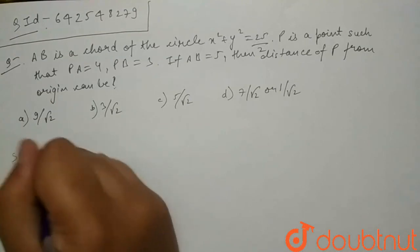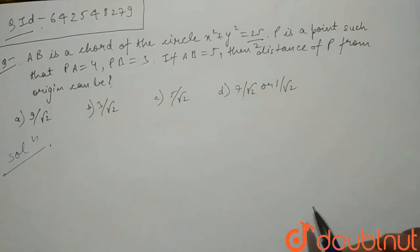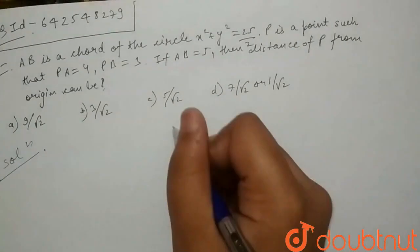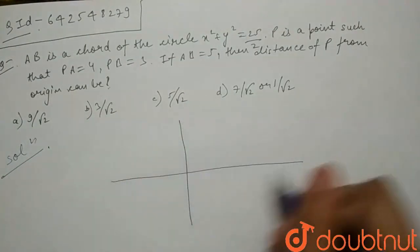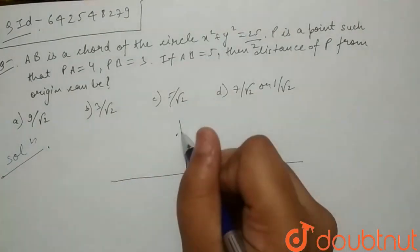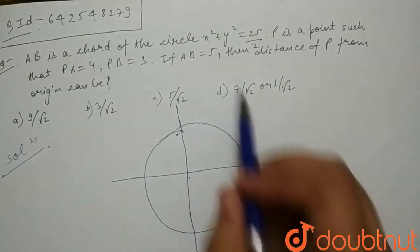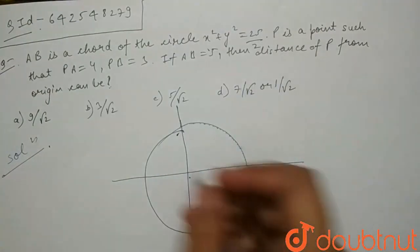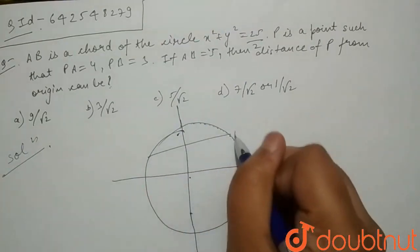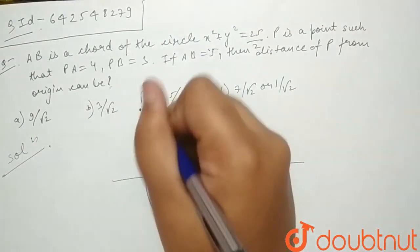So let's begin the solution. Firstly, for this question, we need to draw the diagram. So let's draw - this is y axis, this is x axis, this is the circle. As you can see, the origin is the center of this circle. And let's say this is the chord AB which is given in the question, and this is point P.